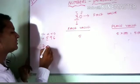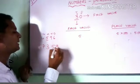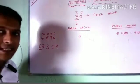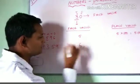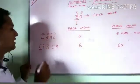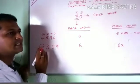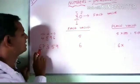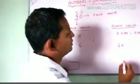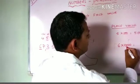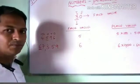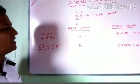One more example: 67359. What is the face value and place value of the underlined digit 6? The face value always remains the same, so it is 6. For the place value, we identify the place of 6 in the number: 9 is in 1s, 5 is in 10s, 3 is in 100s, 7 is in 1000s, and 6 is in 10,000s place. So we multiply 6 by 10,000, giving 60,000 as the place value of 6 in 67359.